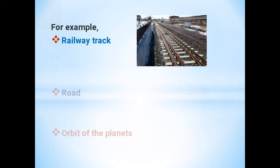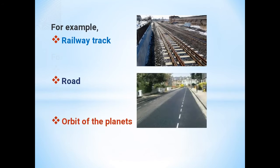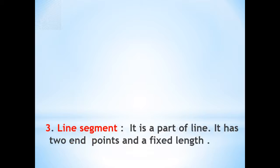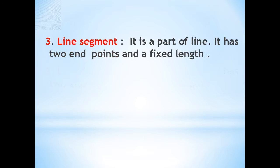Now let us learn about line segments. A line segment is a part of a line. It has two endpoints, that is, one starting point and one ending point, and it has a fixed length.